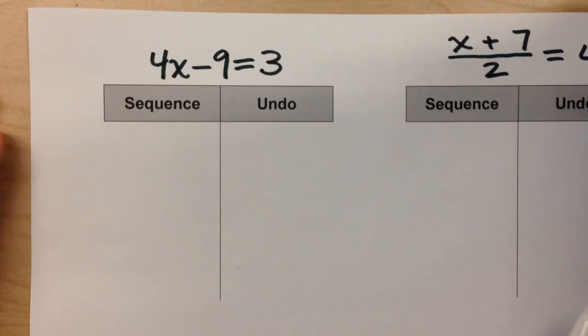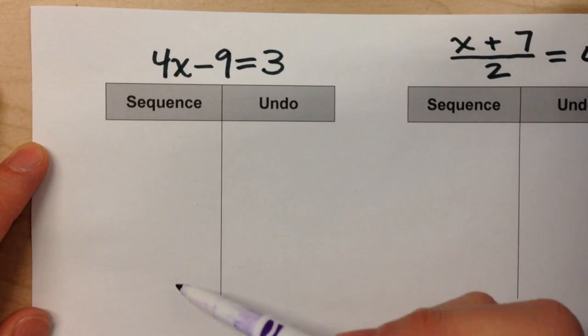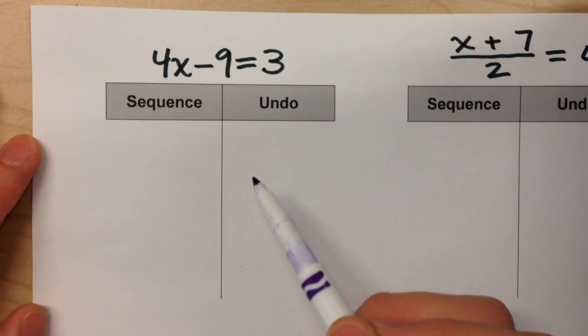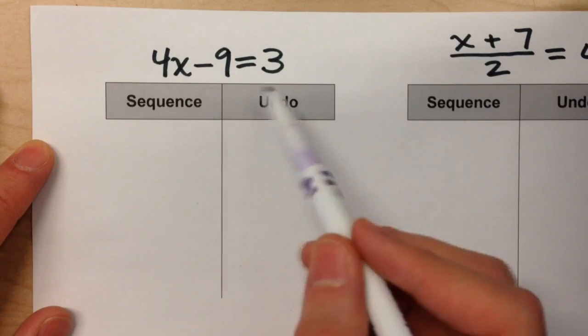Today we solved algebra equations, and the method we used was using an undo table. In an undo table, there's two columns, a sequence column and an undo column. In the sequence column, we list out what happened to x to create the equation.